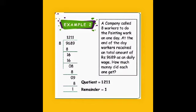So the quotient is 1211 and remainder is equal to 1. In this example, the related exercise is 2.2.